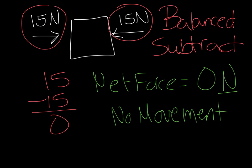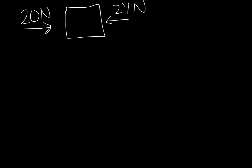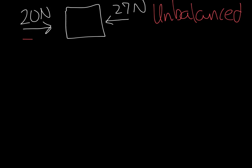Let's look at the next example. We have this box, and we have two forces: one of 20 and one of 27. Are the forces equal? They're not equal — one is bigger. So because of that, these forces are unbalanced. Now let's ask ourselves: same direction or different directions? Different directions — this one's going to the right, this one goes to the left. So they're different directions. Do we add or do we subtract? We're going to subtract these.